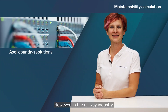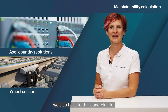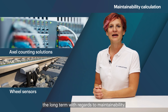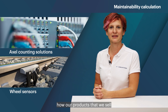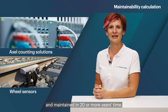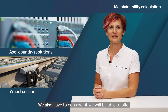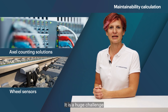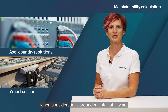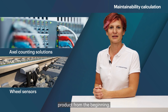However, in the railway industry, we also have to think and plan for the long term with regards to maintainability. We have to think about how our products that we sell to railway operators now can still be repaired and maintained in 20 or more years time. We also have to consider if we will be able to offer a replacement that is functionally compatible. It is a huge challenge which can only be handled when considerations around maintainability are included into the product from the beginning.